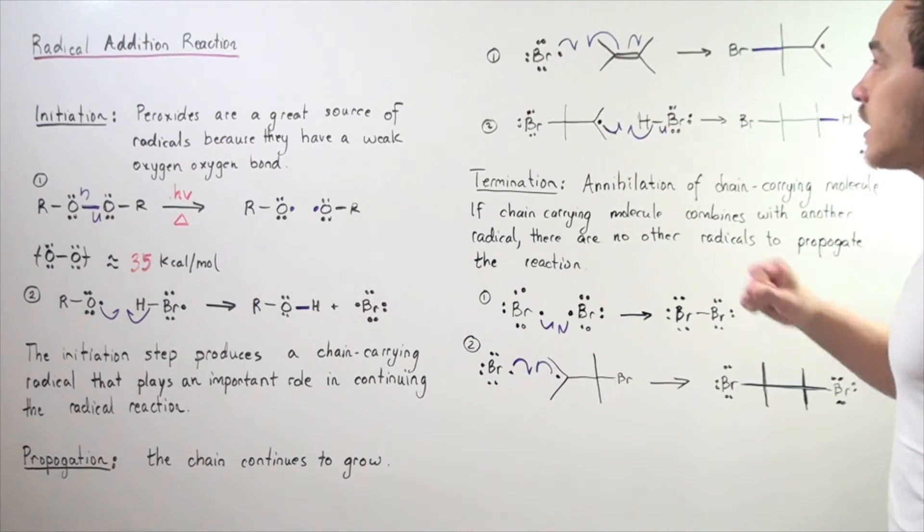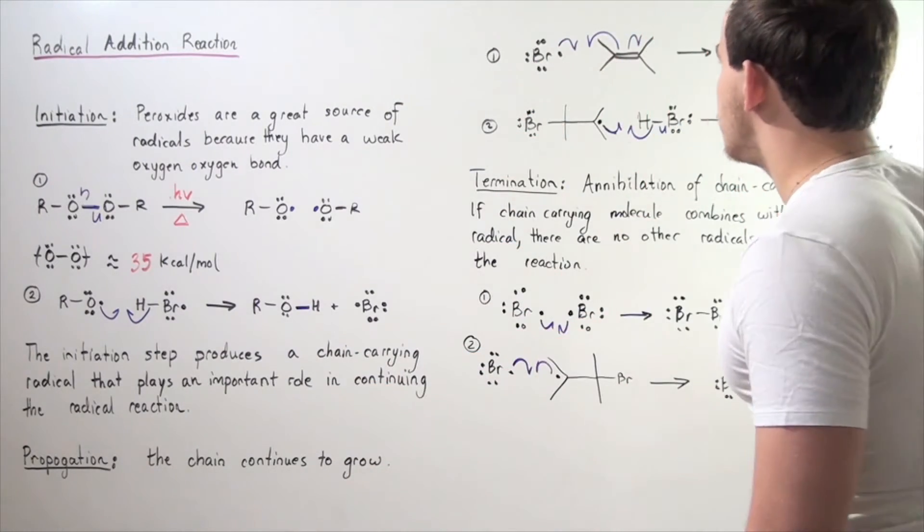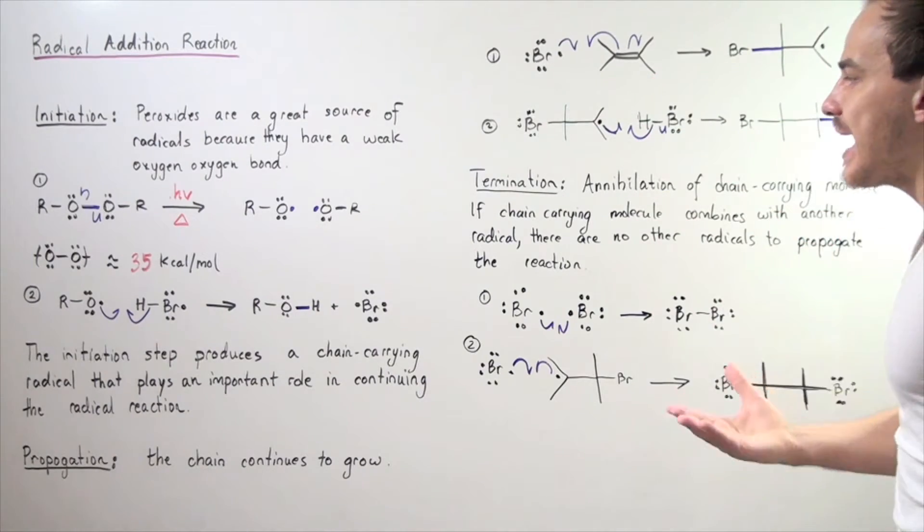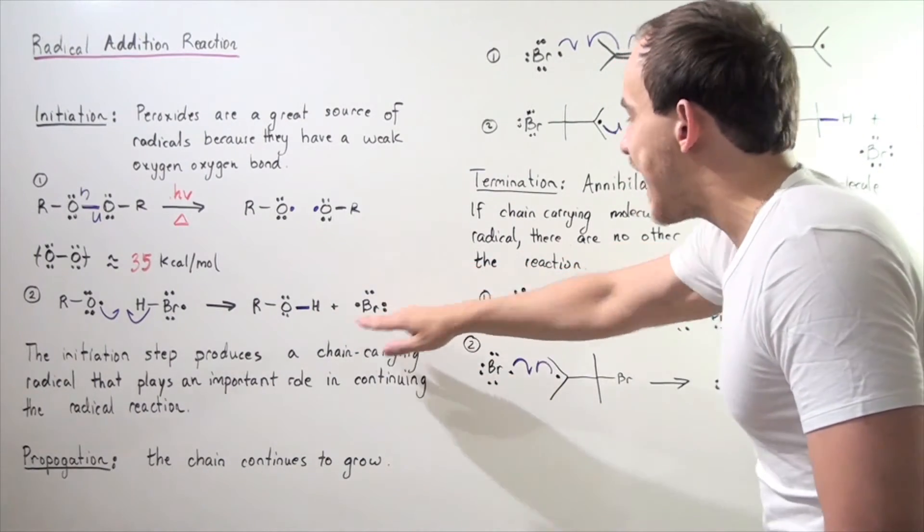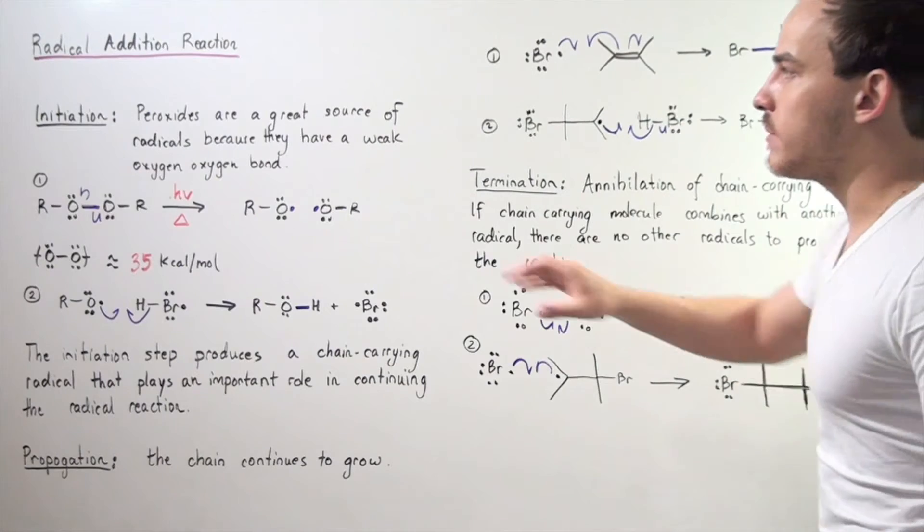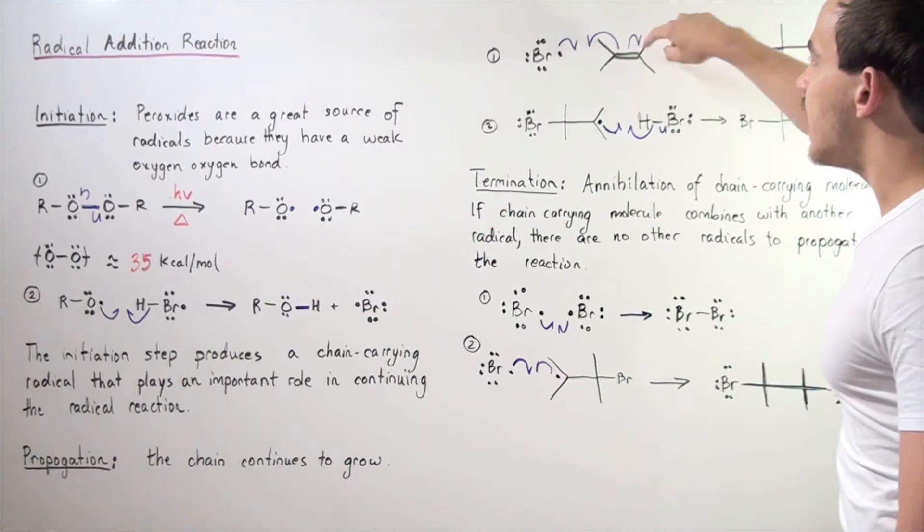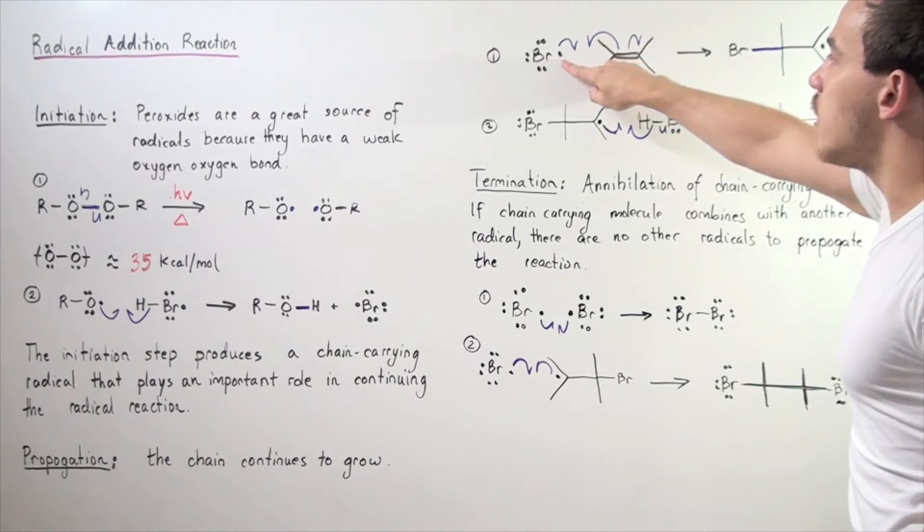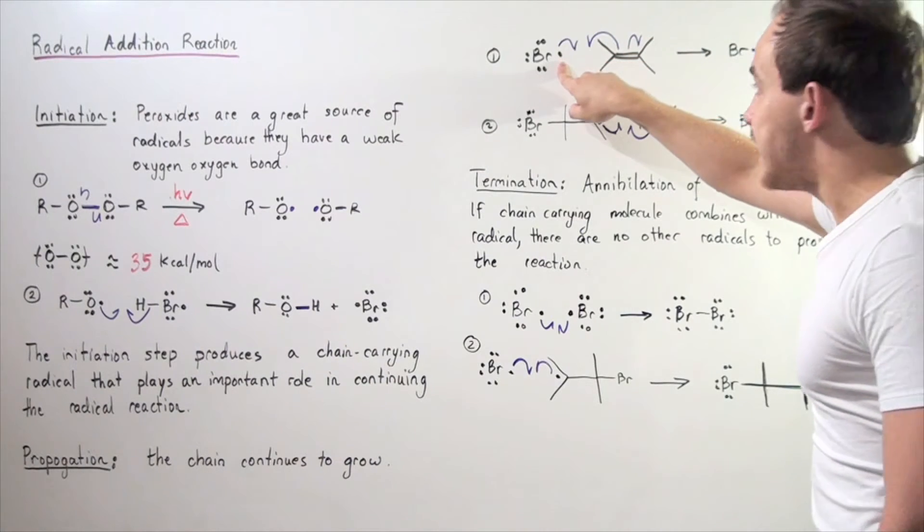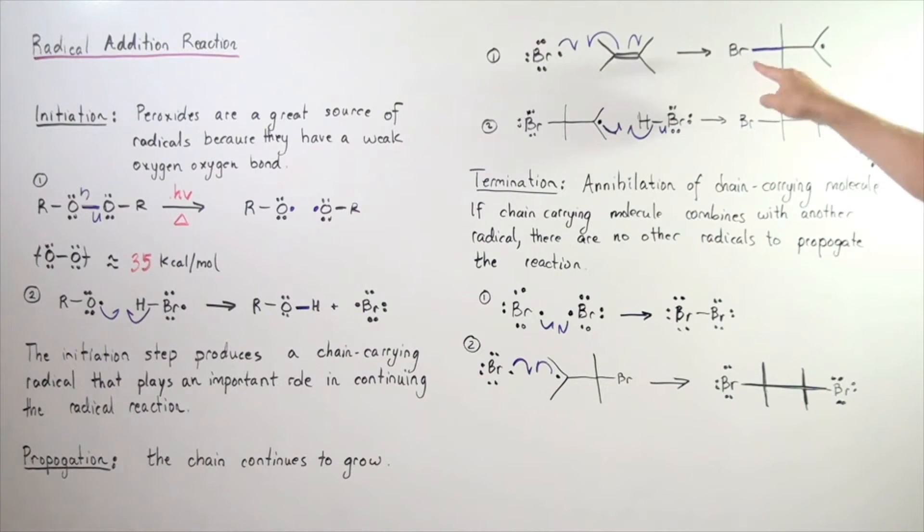Let's look at the two steps of the propagation step. An alkene reacts with a bromine, the chain-carrying molecule formed in the initiation step. One of the electrons in the pi bond breaks off and reacts with this electron, forming the following sigma bond.